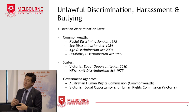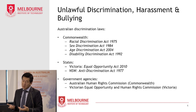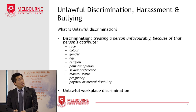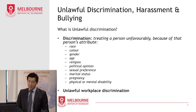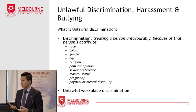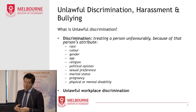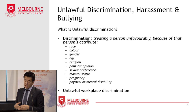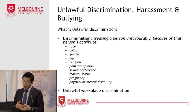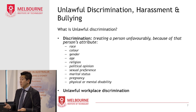So what do we mean when we refer to unlawful discrimination, harassment and bullying? In terms of discrimination, it generally means treating a person unfavourably because of the person's attribute, such as their race, colour, gender, religion, age or political opinion. Unlawful workplace discrimination occurs when an employer takes adverse action against an employee or a potential employee because of their personal attribute — such as terminating an employee because of their religion, or refusing to employ someone just because of their nationality.